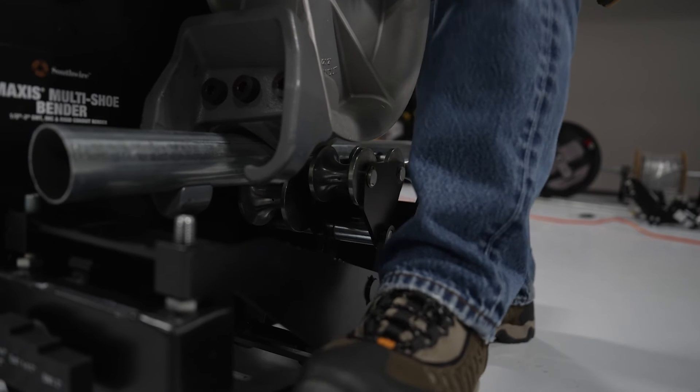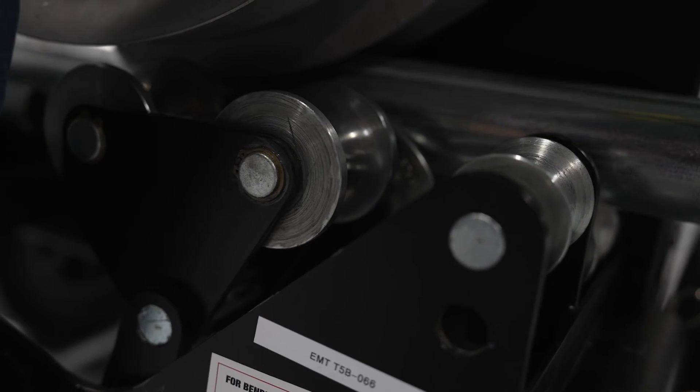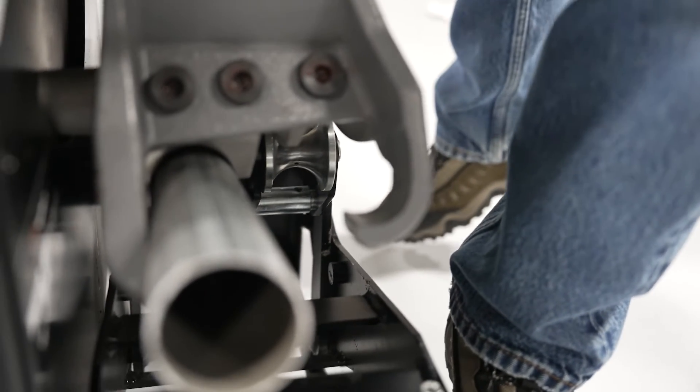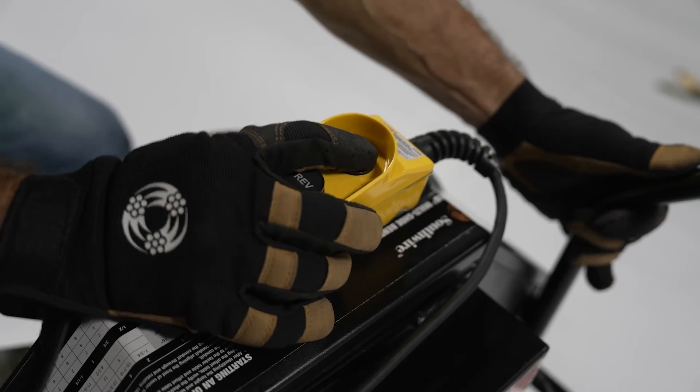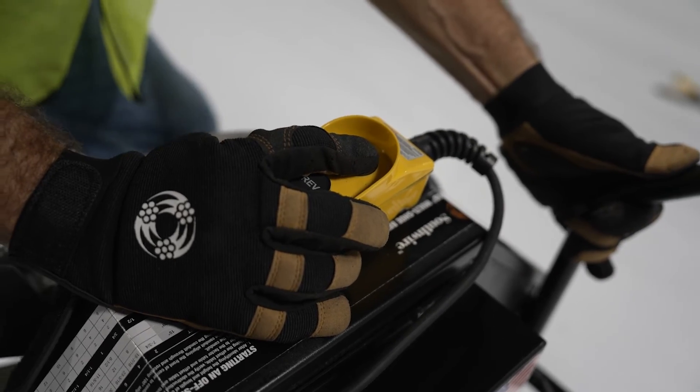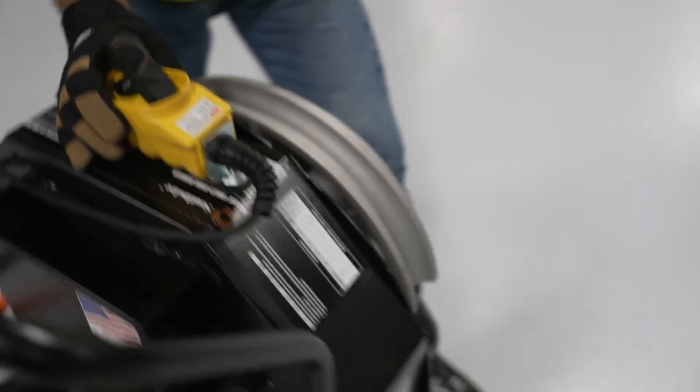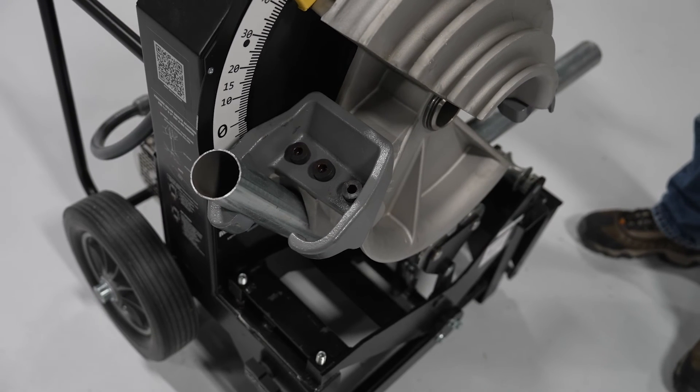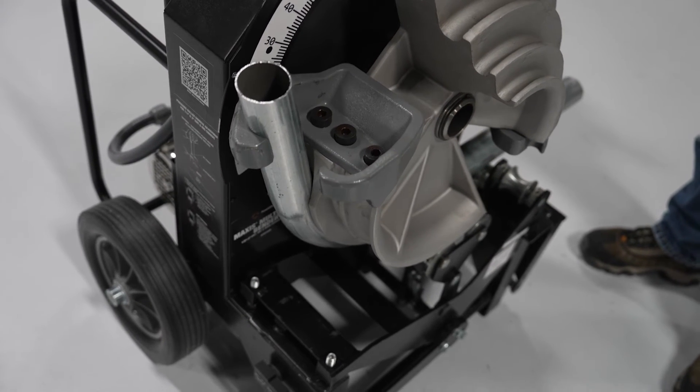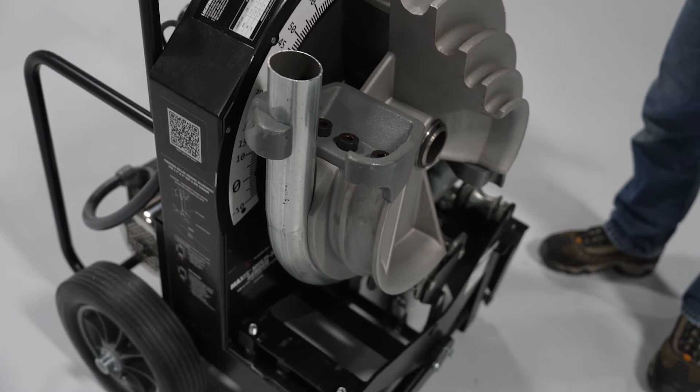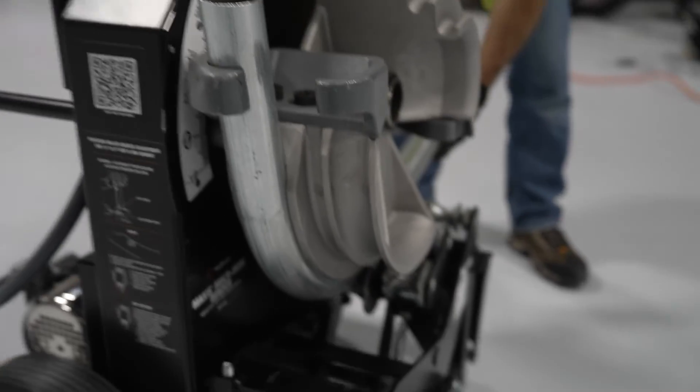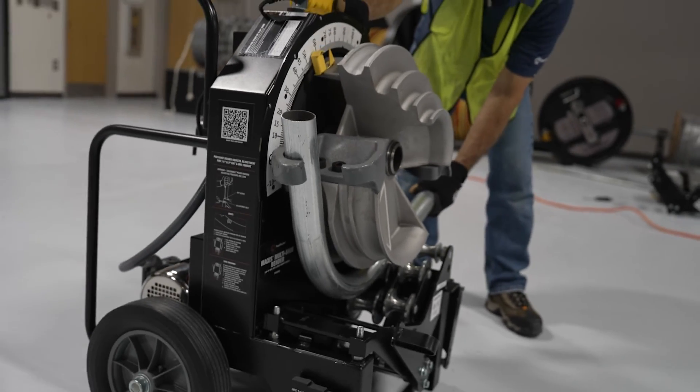Next, place your foot on the pressure pedal to bring both rollers into contact with the conduit. Start the bend by pushing down on the pressure pedal with moderate pressure. Press and hold the forward button on the pendant while maintaining pressure on the pedal. As the bend begins, the pressure rollers will rotate and roll into the fully engaged position. The pressure pedal should come into contact with the stop, and once the pressure rollers are fully engaged, you can take your foot from the pressure pedal and continue with the bend.